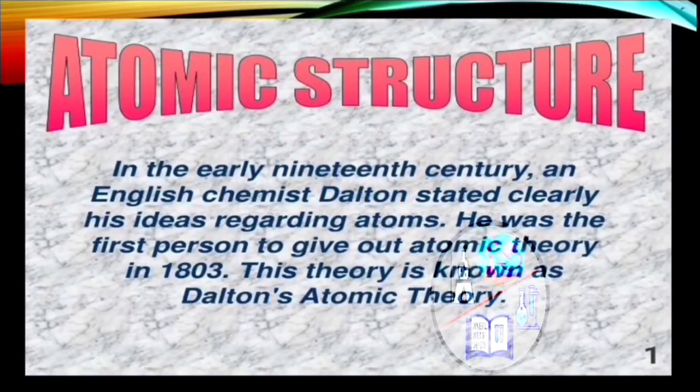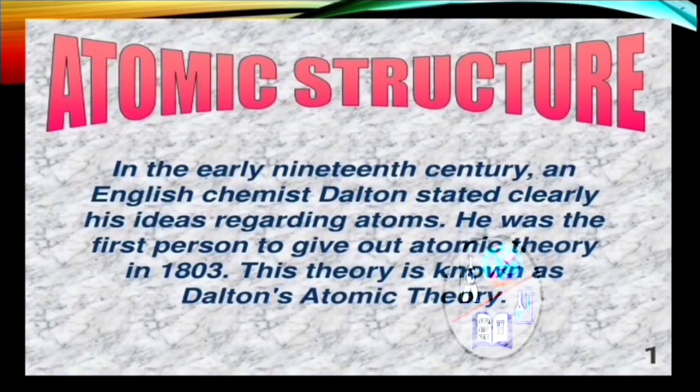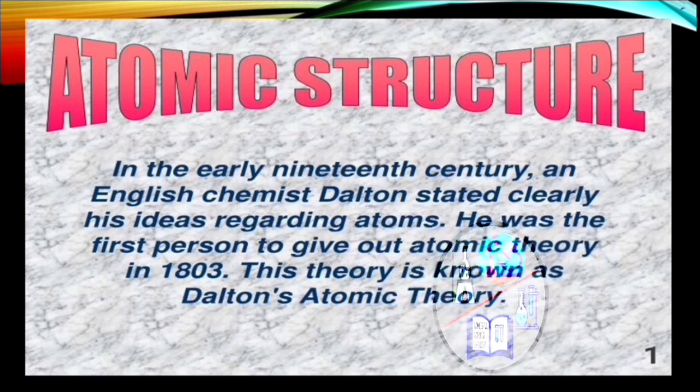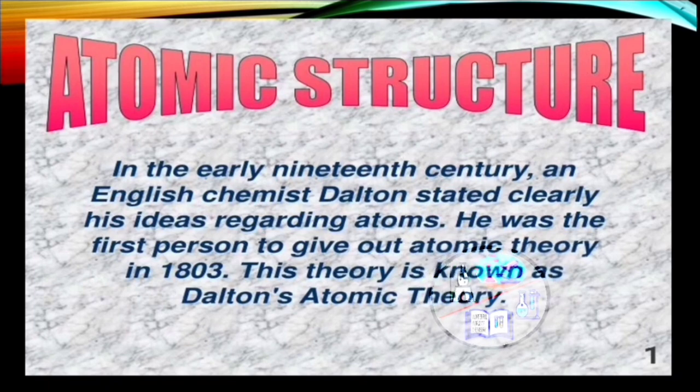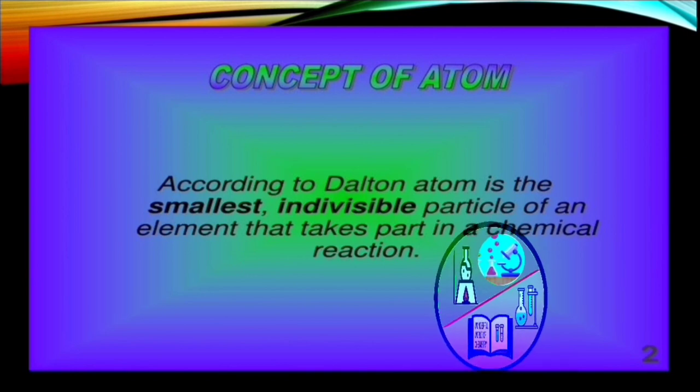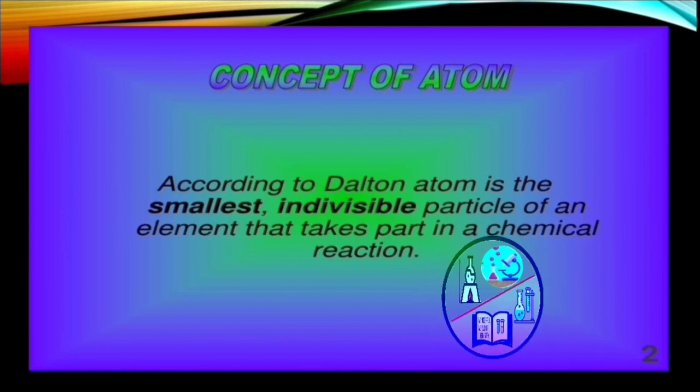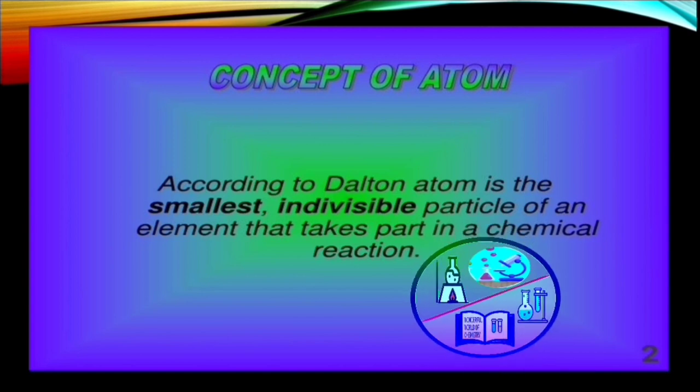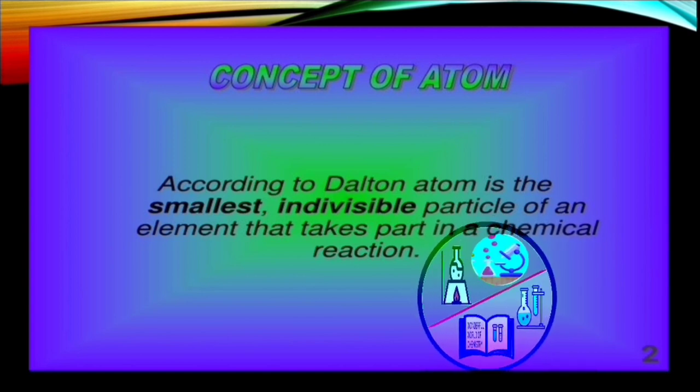In the early 19th century, an English chemist John Dalton stated clearly his ideas regarding atoms. He was the first person to give out atomic theory in 1803, and this theory is known as Dalton's atomic theory. The concept that he gave about atom was: atoms are the smallest indivisible particle of an element that takes part in a chemical reaction.